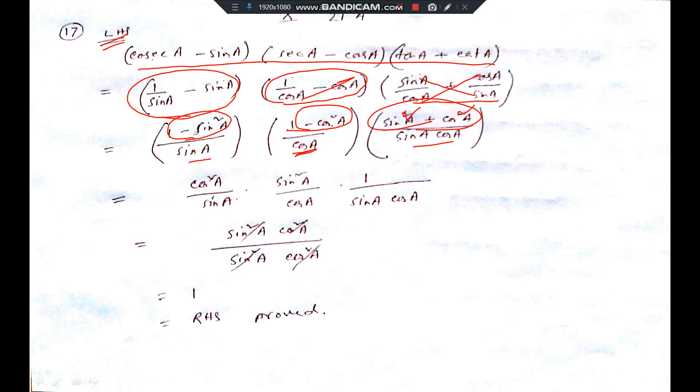Now, see, here, sin A into sin A, that is sin square A. Here, written cos A into cos A, that is cos square A. Now, see, this is cut, this is cut. So 1, we have got right hand side 1, so it is proved. That's all.